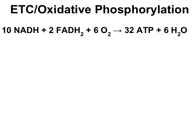Here's an equation for the electron transport chain and subsequent oxidative phosphorylation: 10 NADH plus 2 FADH2 plus 6 O2 react to make 32 ATPs and 6 waters. Thinking about where the reactants come from: of the NADH, 2 came from glycolysis, 2 from the link reactions, and 6 from the Krebs cycle. FADH2 came from the Krebs cycle. Oxygen is what we breathe in, or it diffuses into an organism from the environment.